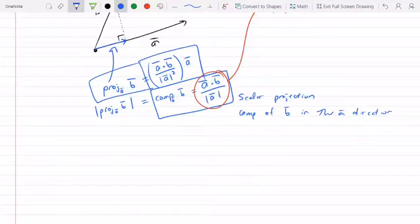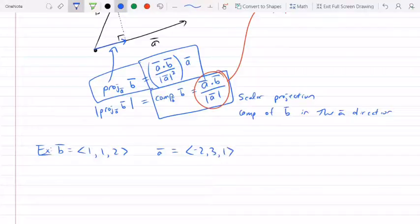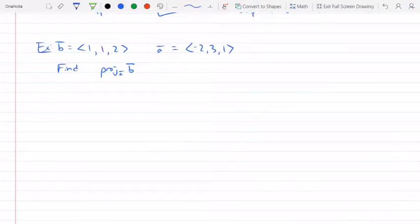Let's say we've got the vector. B is 1, 1, 2, and A is negative 2, 3, 1. I want to find the projection of B onto A. So, the first thing that I do is find the component. Actually, I'm going to go straight to the final answer, if that's all I'm looking for. Then I will do A dot B over the magnitude of the vector I'm projecting onto squared times A.